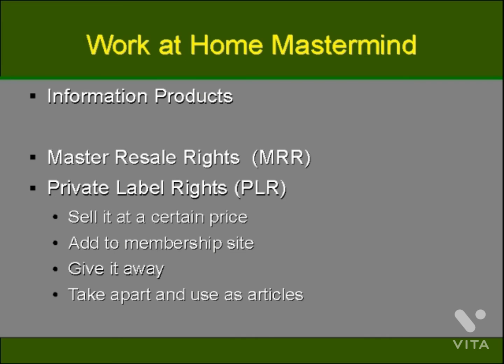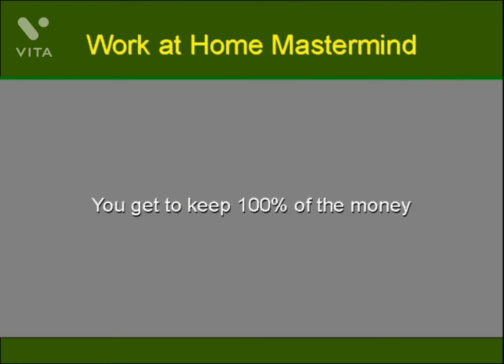The rights file usually breaks down something like this: you can sell it at a certain price, add it to a membership site, give it away for free, or take it apart and use it as articles. The benefits of an information product business are that there's no inventory to buy or store because the products are digital. After the customer buys, you redirect them to a page to download the product. With MRR and PLR products you keep 100% of the money, you can control distribution, and you can build a list. As you market to your list, people will buy from you over and over again, and you can find other products for continuous income.